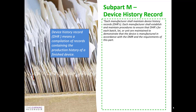In other words, your device history record comes after your device master record. Your device should have been manufactured in accordance with the procedures and specifications that are in your device master record, and out of that will come your evidence that this has occurred, and that will be found in your device history record.